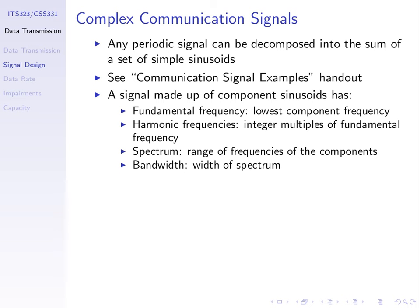Because a signal is made up of summing multiple sine waves, each with their own frequencies, we refer to that set of frequencies as the spectrum of the signal. If a signal has components at 2, 6, and 10 Hz, the spectrum is 2, 6, and 10 Hz — three components with those particular frequencies. The width of that spectrum, ranging from 2 Hz up to 10 Hz, we refer to as the bandwidth — 8 Hz in that case.